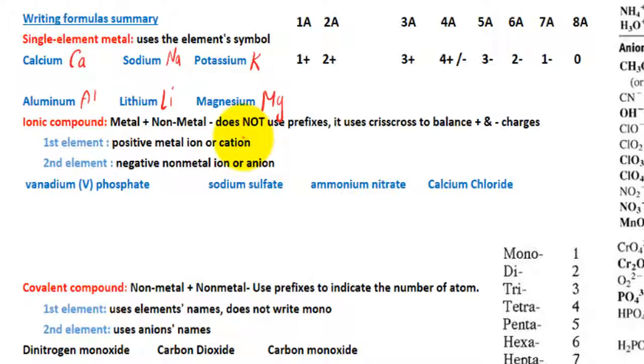Now, ionic compound naming does not use prefixes, so we have to use the criss-cross method to balance the positive and the negative charge. In this case, when naming ionic compound, the first element is always the positive metal and the second element is always the negative.